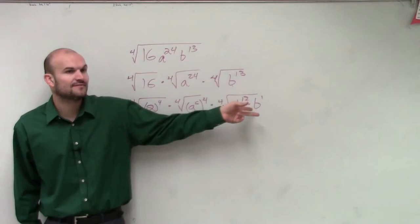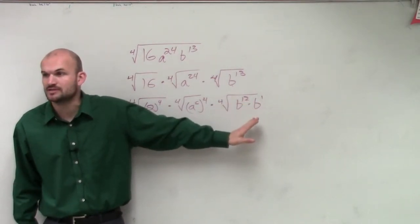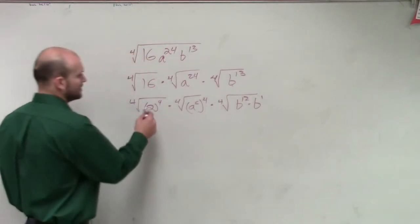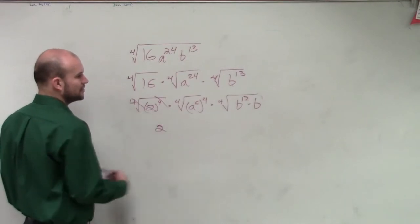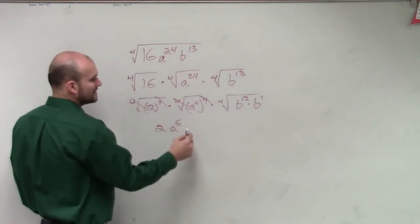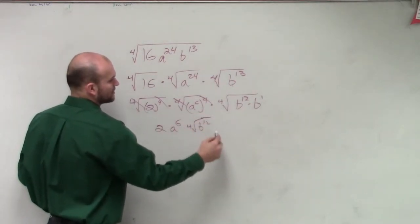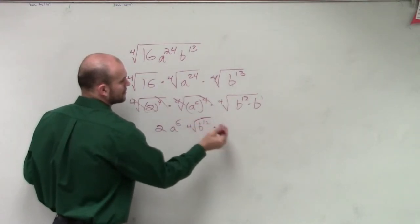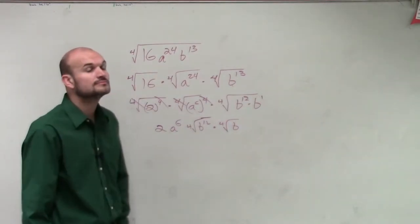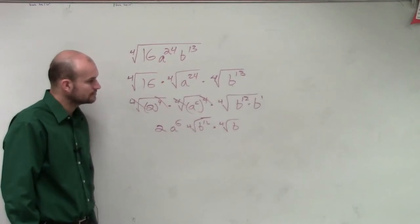Since I have a product, can I break that up by using the product rule of radicals? Yes. So using inverse operations, we get 2 and a to the 6th. Now we can rewrite this as the fourth root of b to the 12th times the fourth root of b. Could you write it as b to the 6th times the fourth root of b? Yes, but I'm not done yet.